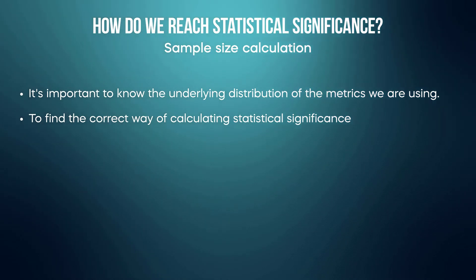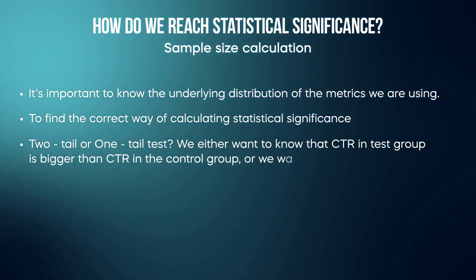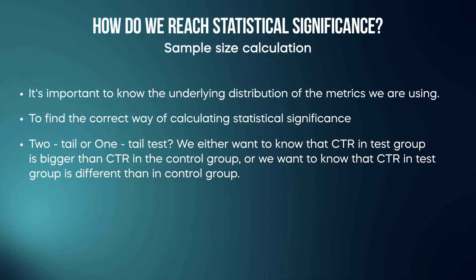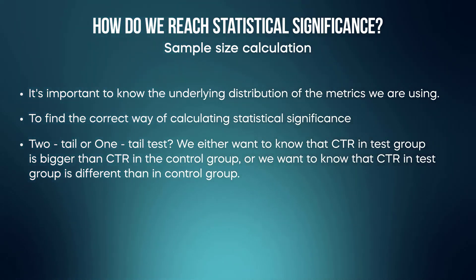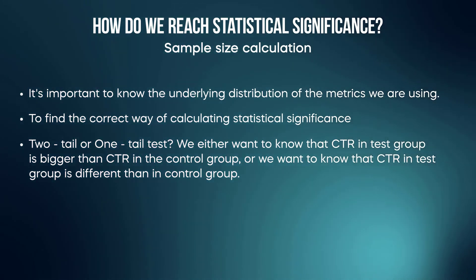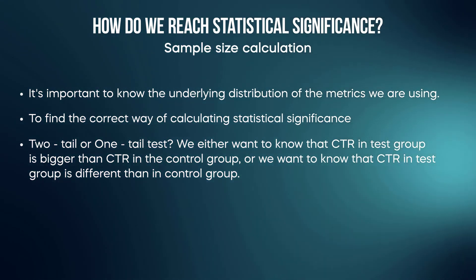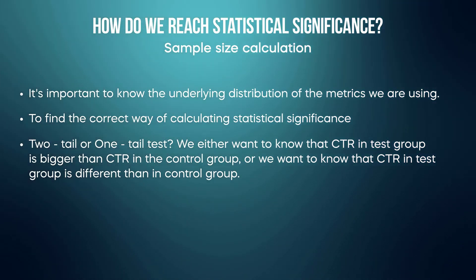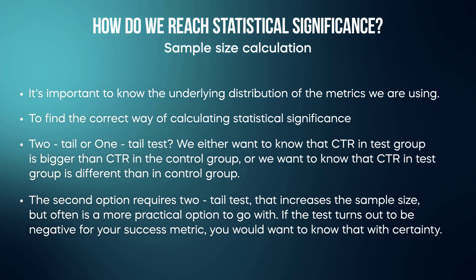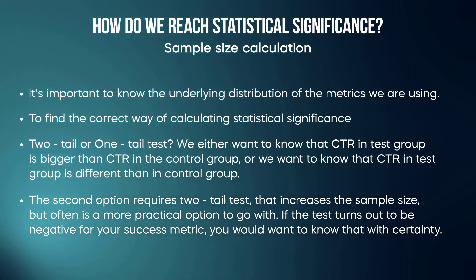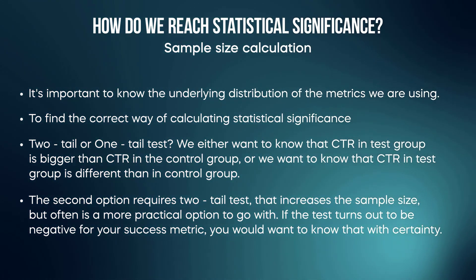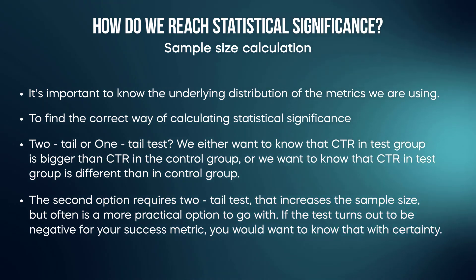It will also be very important to know whether we want to use a two-tail test or a one-tail test. We either want to know that the click-through rate in the test group is bigger than in the control group, or that it is simply different — and those are two different sample size calculations. A two-tail test increases the required sample size but is often the more practical option, because if the test turns out negative for your success metric, you will at least want to know that with certainty.